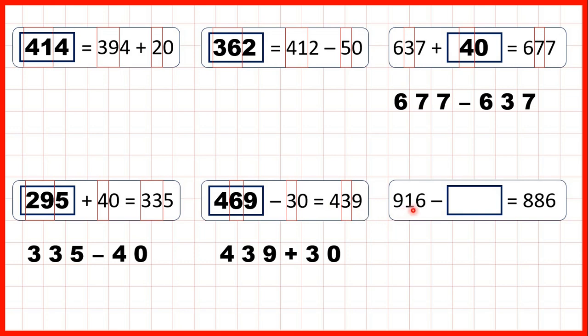Now 916 minus something equals 886. So if we ignore our ones digits because they stay the same, we can work out 91 minus something is 88. Or we could work out 916 minus 886. So our answer is 30, because 91 minus 3 is 88.